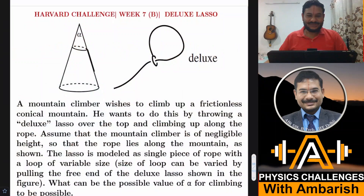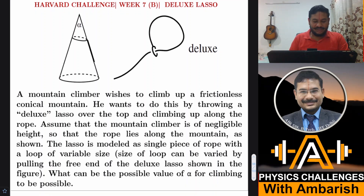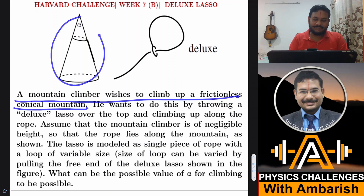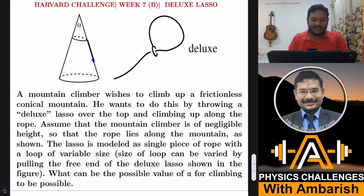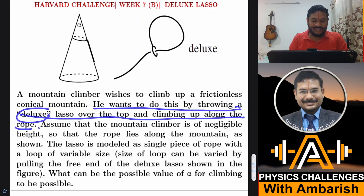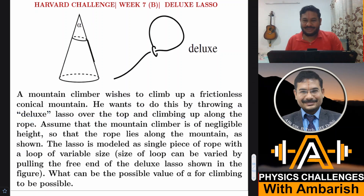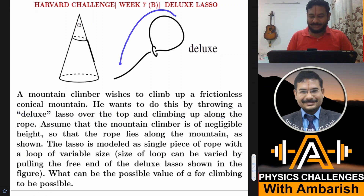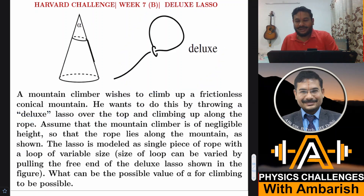A mountain climber wishes to climb up a frictionless conical mountain. He wants to do this by throwing a deluxe lasso over the top and climbing up along the rope. The word 'deluxe' is used because in the problem there were two types of lasso. We have only one type of lasso here and we're calling it a deluxe lasso.